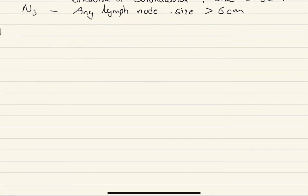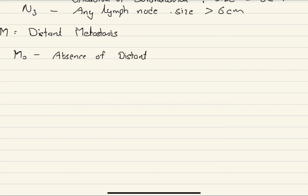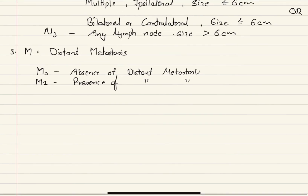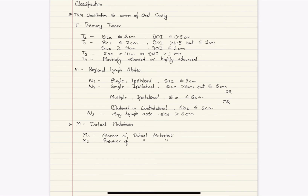M refers to distant metastasis. M0 is when there is absence of distant metastasis, and M1 is when there is presence of distant metastasis. These are the TNM classifications for cancer of the oral cavity, which includes the tongue.